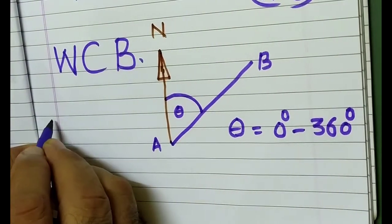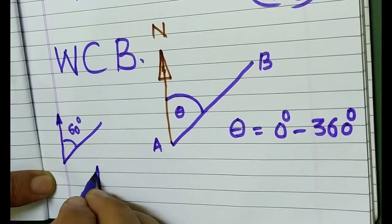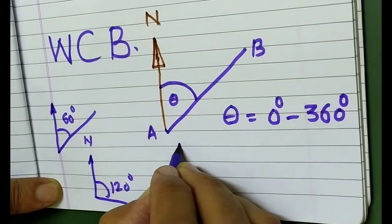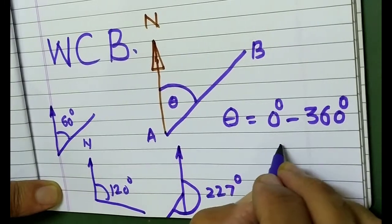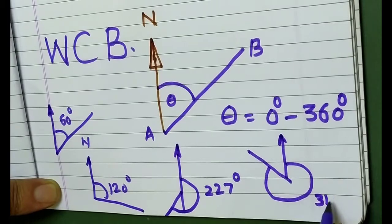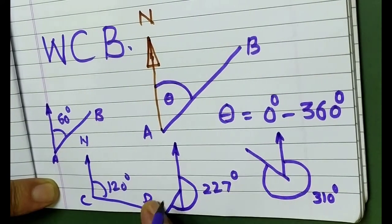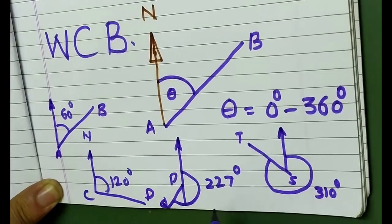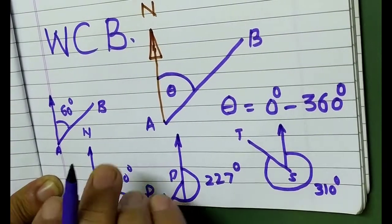For example, one bearing may be 120 degrees, and another bearing may be 310 degrees. These are the bearings — the horizontal angles that any line makes with the north. When the value lies between 0 to 360 degrees, this is known as whole circle bearing. Next, we are going to start the quadrantal bearing QB.